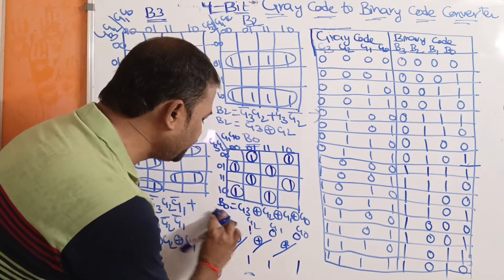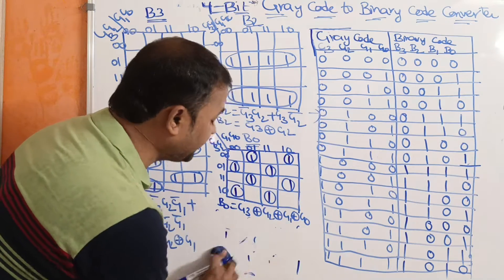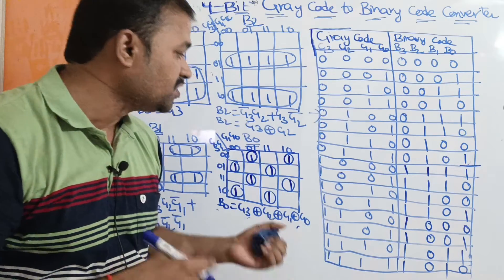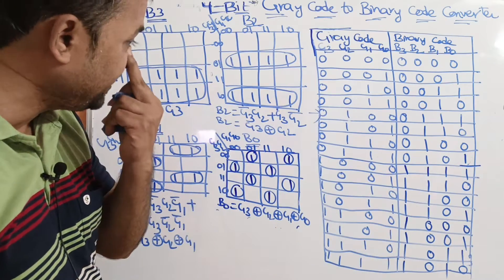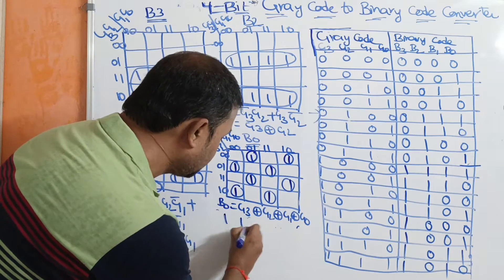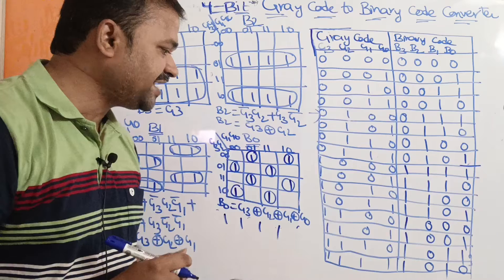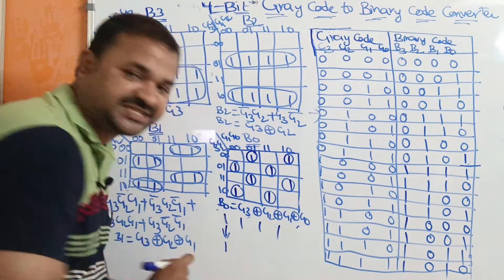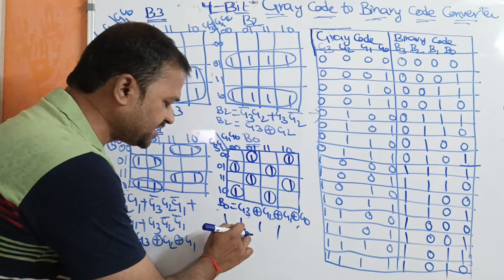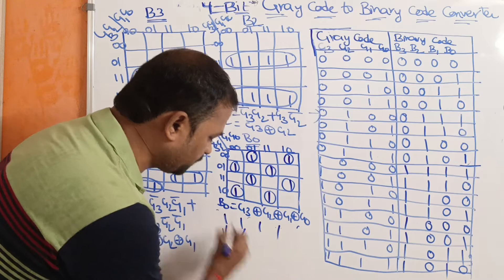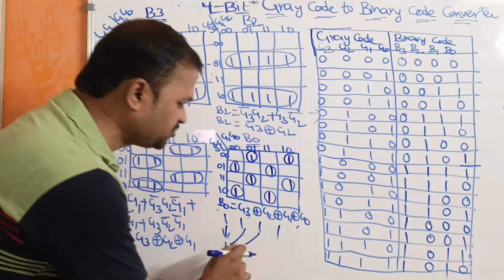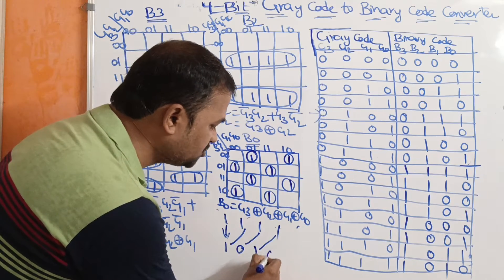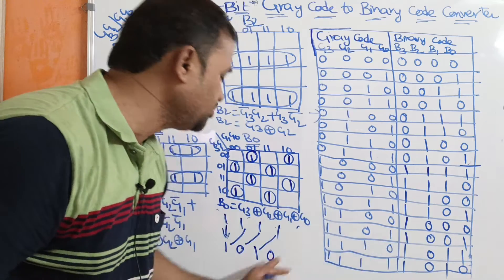Likewise we can get the binary code for any grey code very easily. Now let us take the last number: all ones — 1111 — as the grey code. We keep the first bit as it is. Next, 1 exclusive-OR 1 equals 0. Then 0 exclusive-OR 1 equals 1. Next, 1 exclusive-OR 1 equals 0. So the binary code for all-ones grey code is 1010.